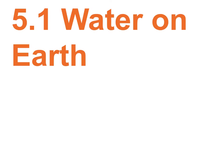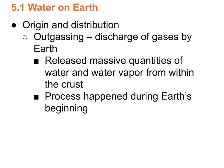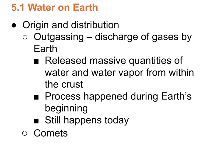Let's talk about water on Earth. A lot of the water on Earth came from outgassing — the discharge of gases by Earth. This is water that was present when Earth formed out of that cloud of gas and dust and rocks. Massive quantities are released. It happened during Earth's beginning and still happens today. We also got a lot of water from comets.